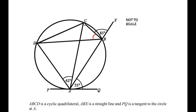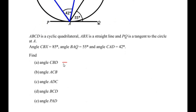In our example, points C and D divide the circle into two segments. These two points make an angle at point B and the same two points make an angle at point A, both in the major segment. According to the angles in the same segment theorem, if angle CAD is 42 degrees then angle CBD is also 42 degrees. So angle CBD equals 42 degrees. Now let us find the next angle, angle ACB.